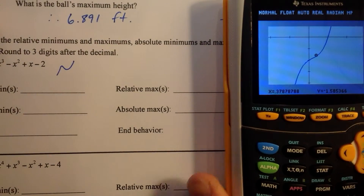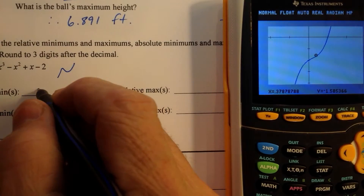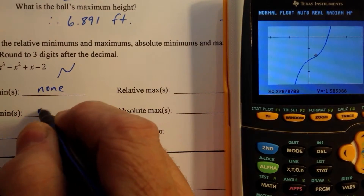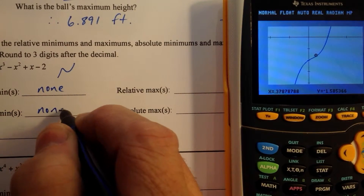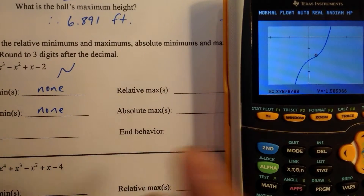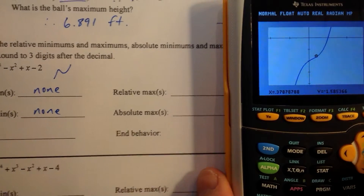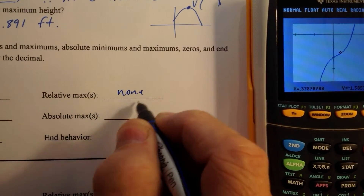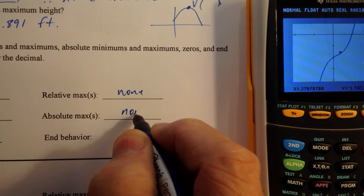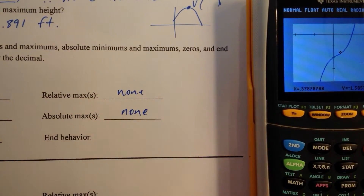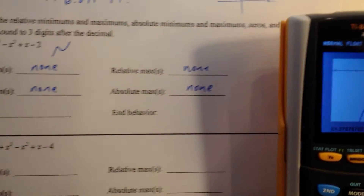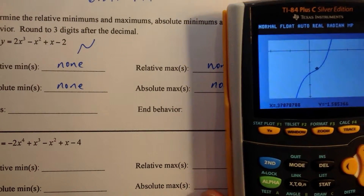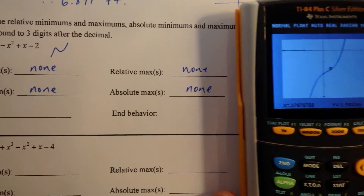So we have no relative min, no absolute min, no relative max, and no absolute max. I should have picked a better function there.